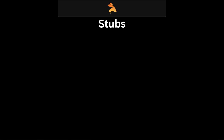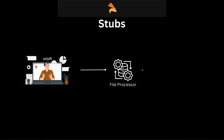Starting with stubs, consider a scenario where you have developed an online education platform that has a feature using which students can upload a PDF format of their completed assignments. The uploaded PDF first goes through file processing and then gets uploaded to the cloud, and after the file is saved in the cloud, a success or failure response is returned accordingly.